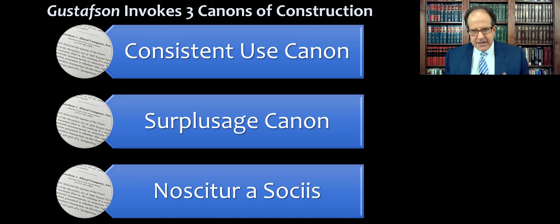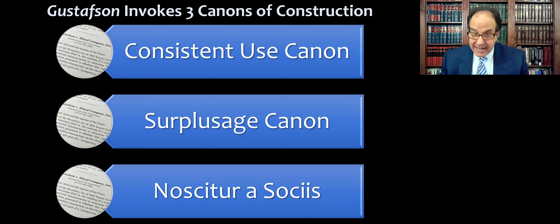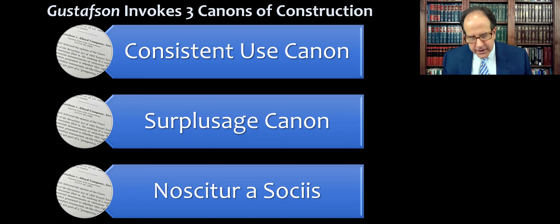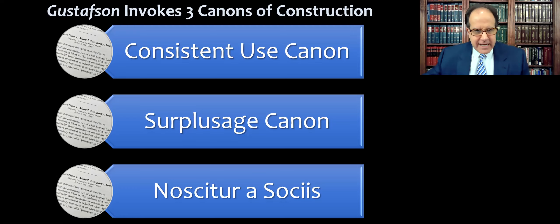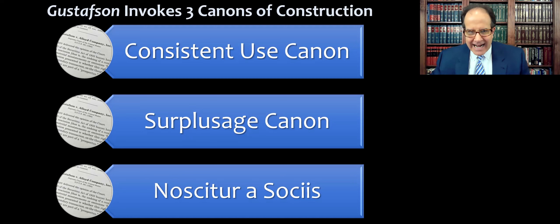The consistent use canon is the idea that courts should presume that a legislature used a term consistently throughout a single enactment or act. This can be taken to an extreme where any given word in the statute means exactly the same thing every time you encounter it. We might flip to other sections of the same act to see how a term is used. Many federal enactments have a definition section as one of the first sections, so if you find something there, you might be invoking the consistent use canon for every time that term occurs.